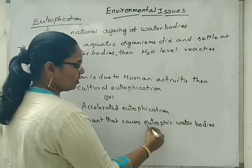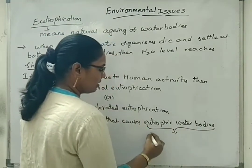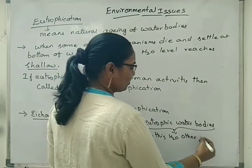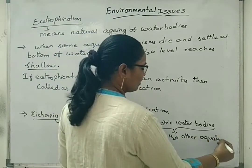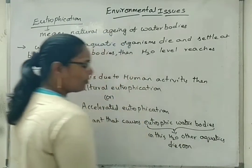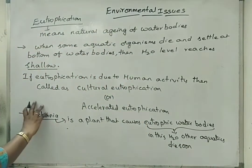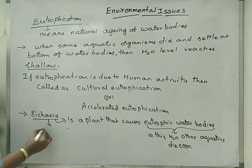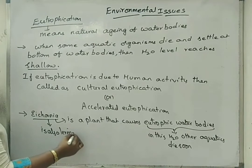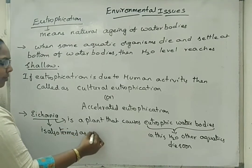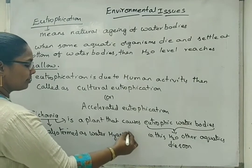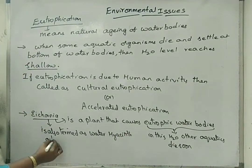In this water, other aquatics die soon because of lack of oxygen. All that oxygen is taken by such types of plants. So eutrophication is also termed as water hyacinth or terror of Bengal.